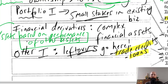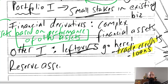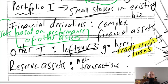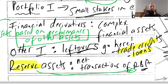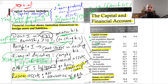Reserve assets — the word 'reserve' is a clue here — relates to the net transactions of the Reserve Bank of Australia. So if the Reserve Bank of Australia is buying and selling currency or carrying out other activities, that will be recorded in this section of the financial account.